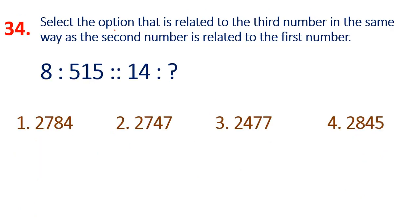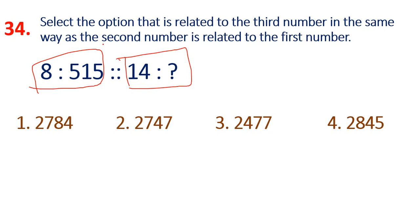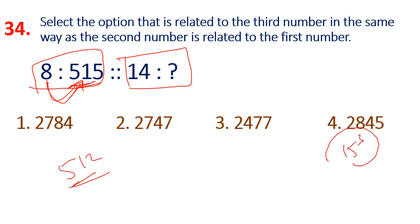Next, question 34: Select the option related to the third number in the same way as the second number is related to the first. The pattern involves cubing: 8 cubed is 512. So we check 512 plus 3. Similarly, we need 14 cubed plus 3.